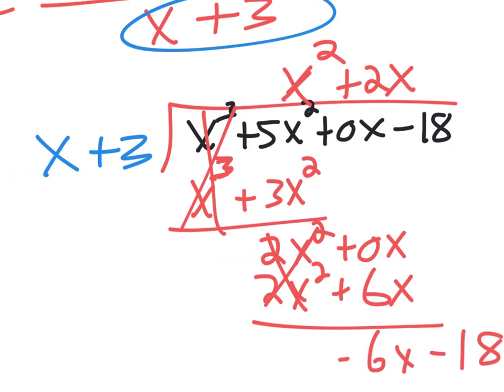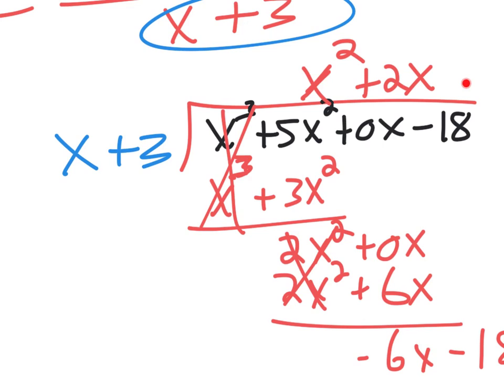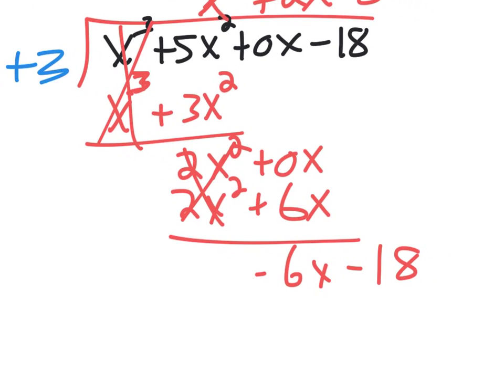Then repeat the process one more time. Got to find a number. To multiply it x to give you negative 6x. That's just negative 6. Negative 6 times x gives you negative 6x. So we've got negative 6x down here. And then you have to carry through. Negative 6 times 3 gives you negative 18.